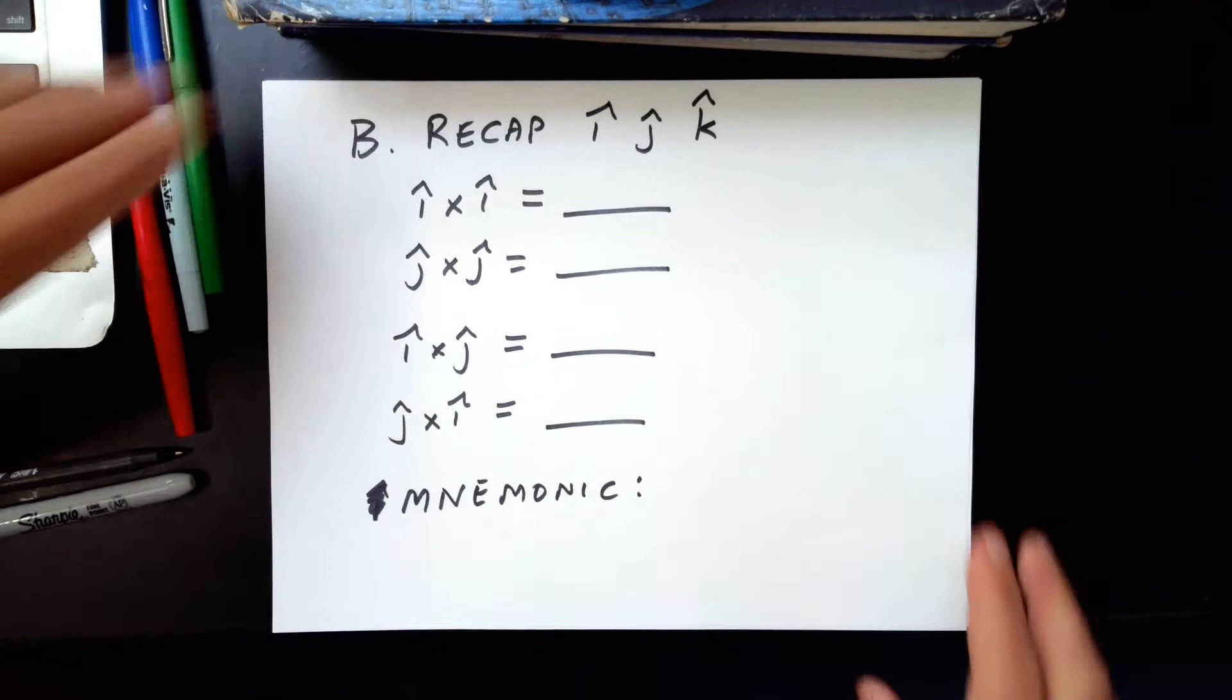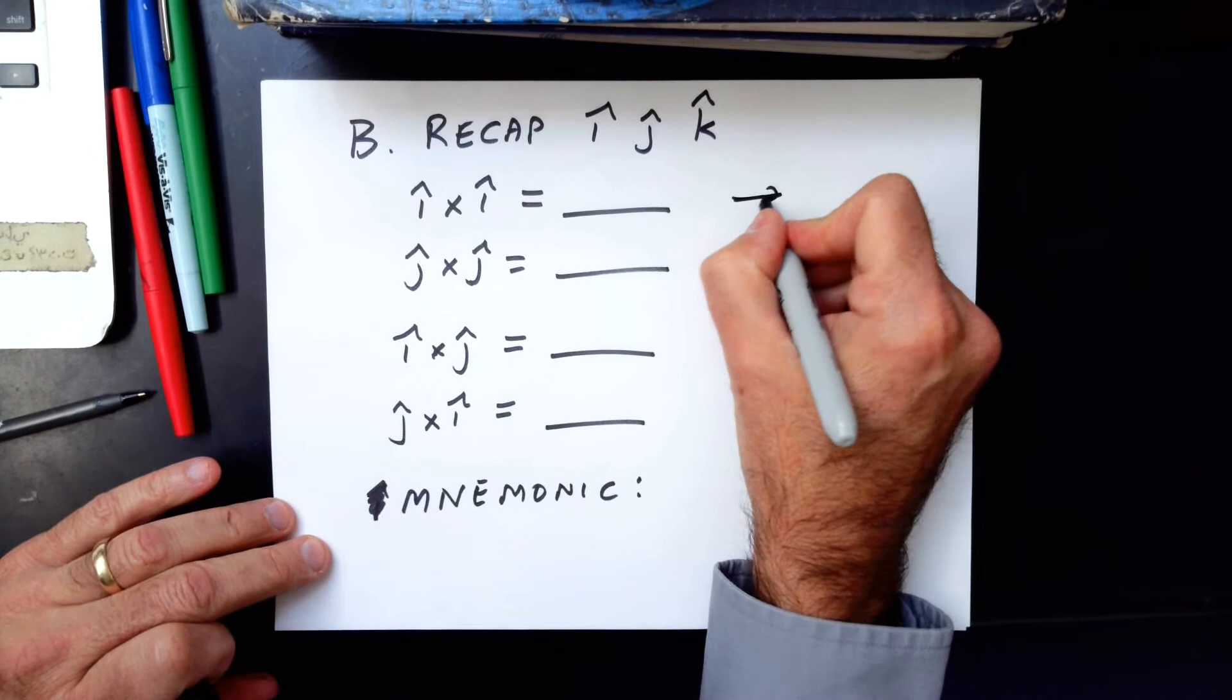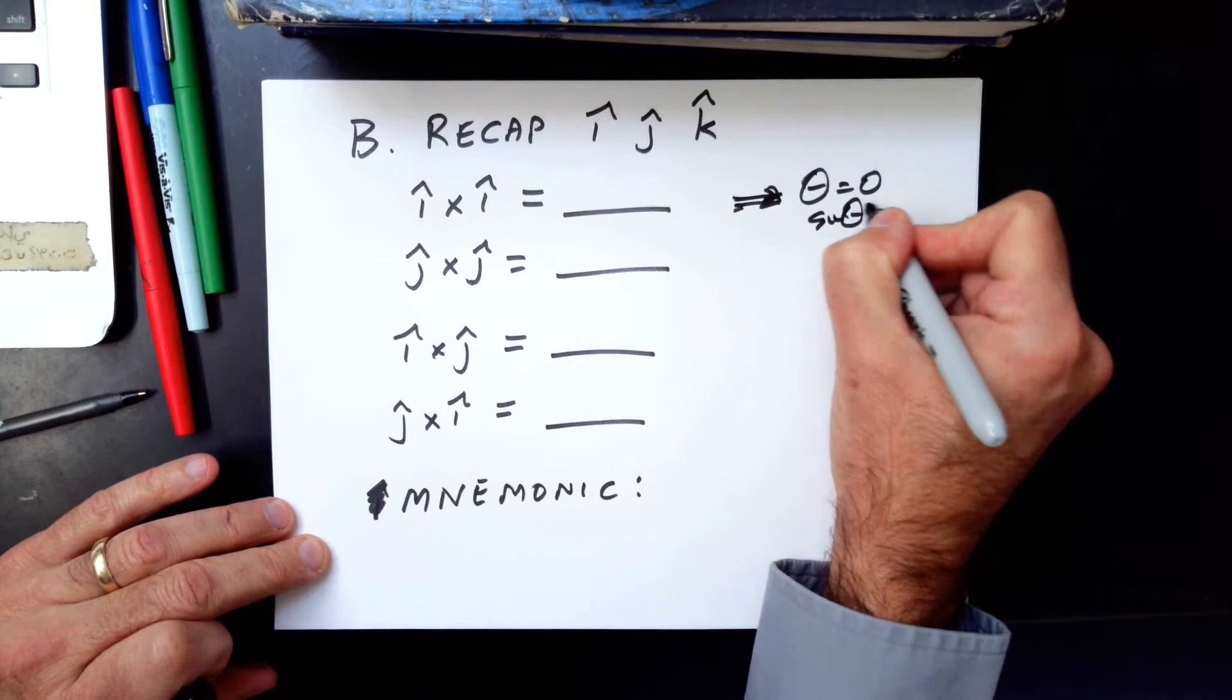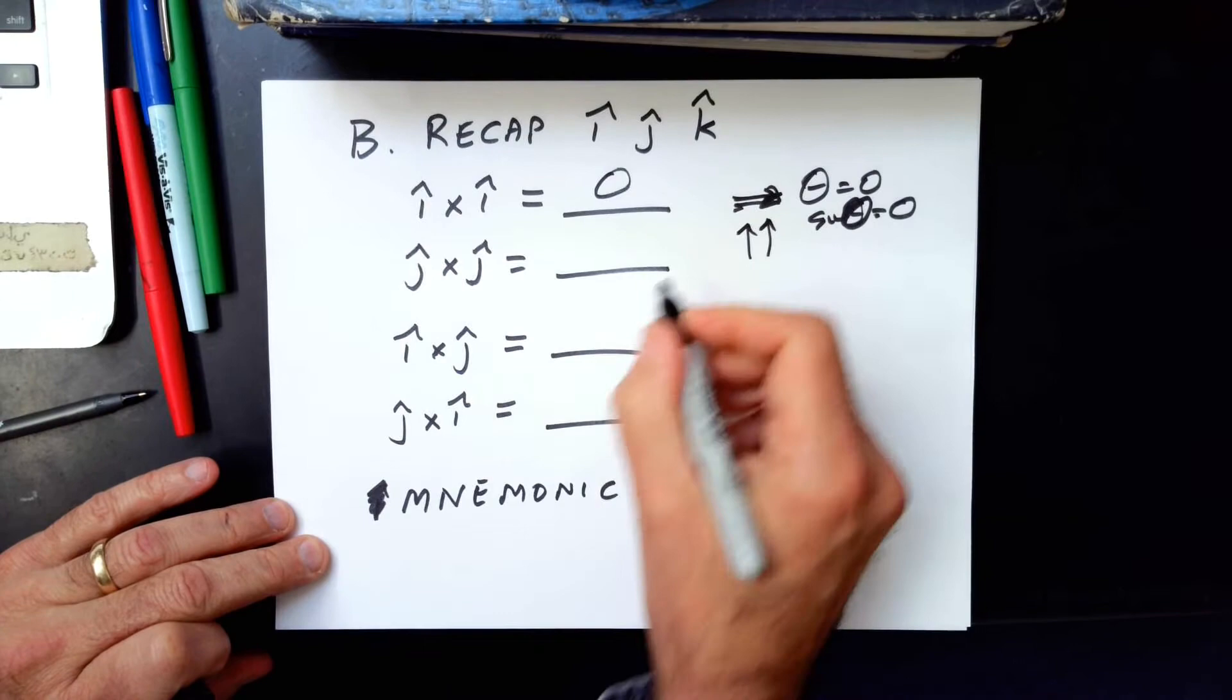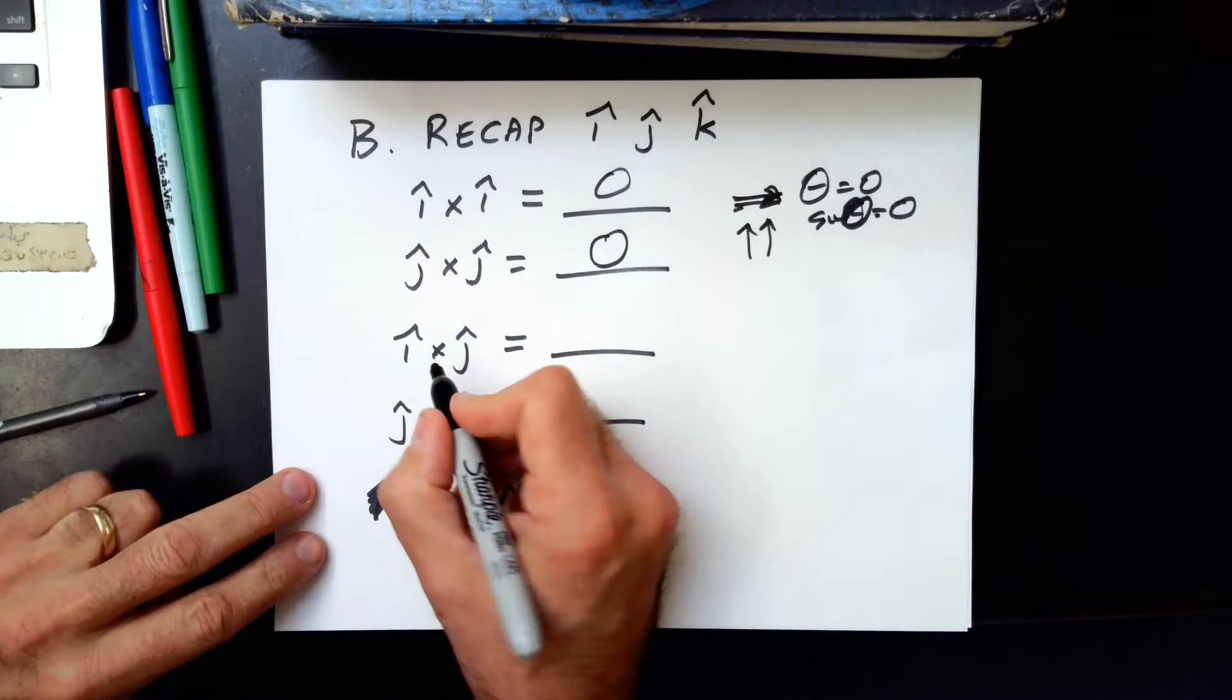We also have to recap how I, J, and K vectors work when we have cross-products. So the first is I cross I. That means one vector points right, the other vector points right, like that. The angle between them would be zero, and the sine of zero is zero. So this would be zero. Likewise for this, this means two vectors pointing up. The angle between them is zero. They are not perpendicular at all. They're parallel.